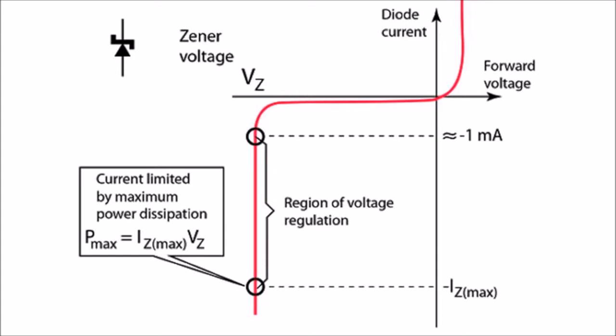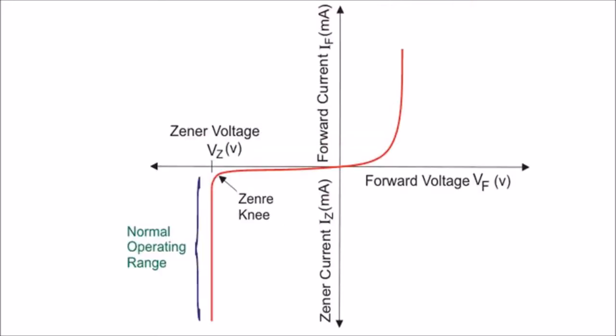Here in the graph, VZ refers to the Zener breakdown voltage and the Zener breakdown voltage typically can range from 1.2V to 200V depending upon its application. The exciting part of this diode is that we can choose the Zener diode with a suitable breakdown voltage to work as a voltage regulator in our circuit.